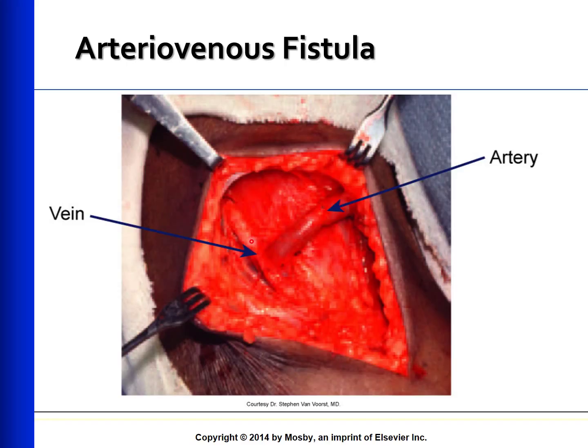Maturation time may take about six weeks to months. AV fistulas should be placed at least three months before the need to initiate hemodialysis. Normally, when the GFR is less than 29 liters per minute, preparations for an AV fistula are made.